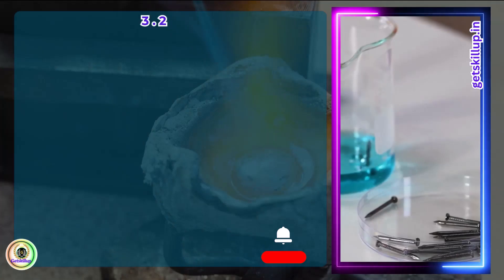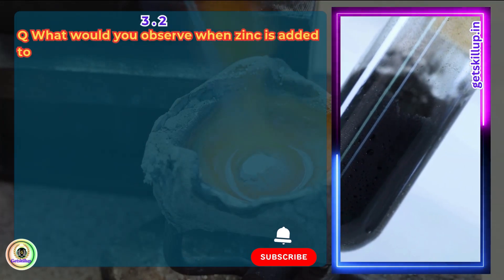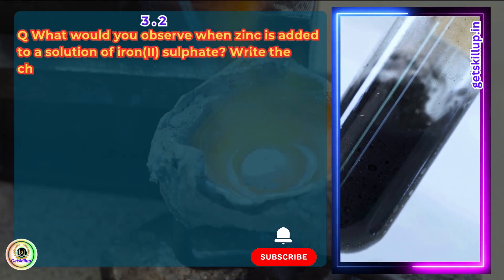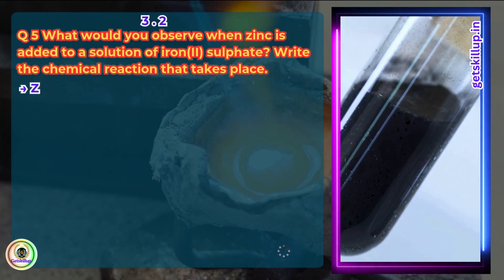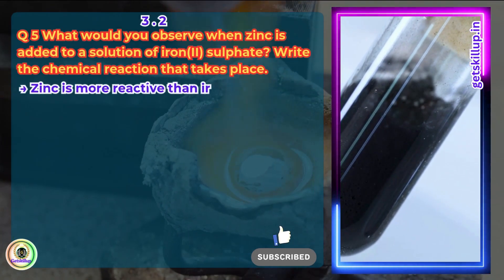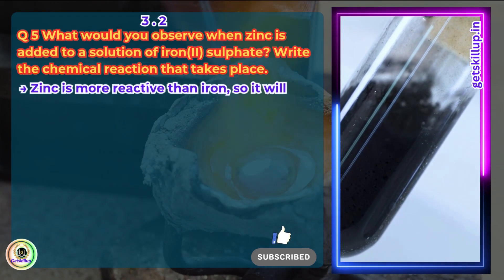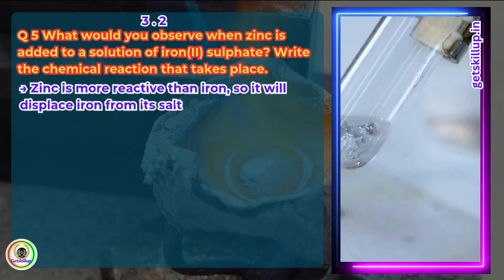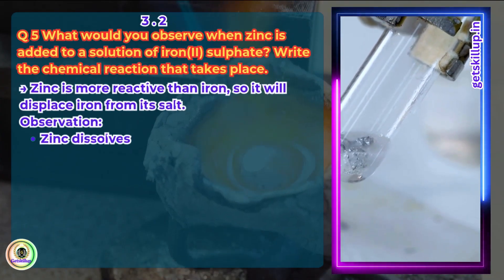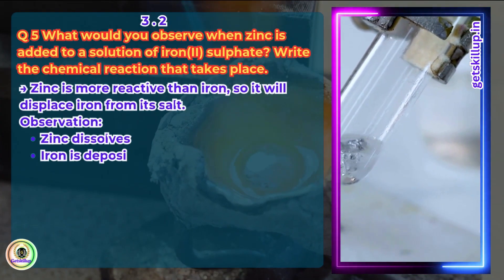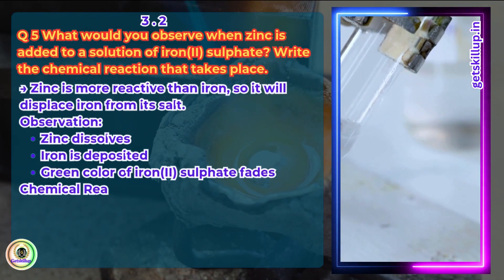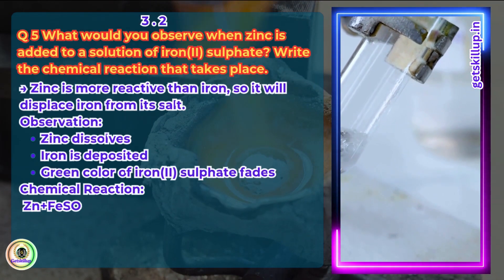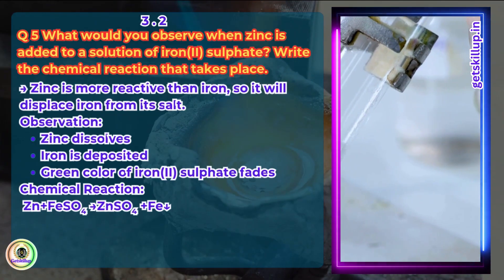Question 5. What would you observe when zinc is added to a solution of iron sulphate? Write the chemical reaction that takes place. Answer: Zinc is more reactive than iron, so it will displace iron from its salt. Observation: Zinc dissolves, iron is deposited, and the green color of iron sulphate fades. Chemical reaction: Zn + FeSO₄ → ZnSO₄ + Fe.